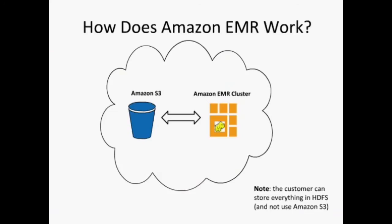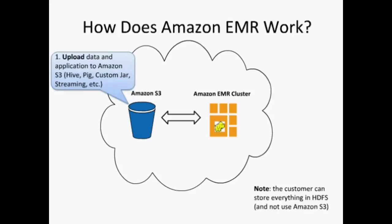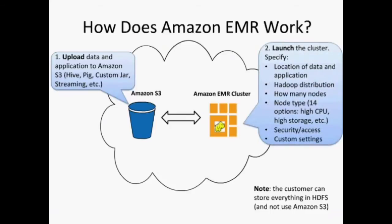To give a couple of examples: in the media and advertising space, organizations correlate ad impression logs with clickstream data to deliver better and more relevant advertising. In retail, companies like Amazon.com use EMR to power product recommendations. In life sciences, there's a tremendous amount of genomics processing and bioinformatics research. The use cases are quite varied. A simple model for how EMR works: first, you upload your data and processing application to Amazon S3, our storage service. You can write your application in Java, Hive, Pig, or a variety of other languages.